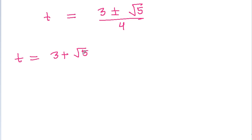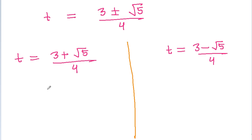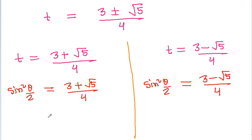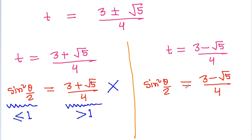So t equals (3 + √5)/4 or t equals (3 − √5)/4. Since t equals sin²(θ/2) and sin²(θ/2) must be less than or equal to 1, the valid value is sin²(θ/2) = (3 − √5)/4.